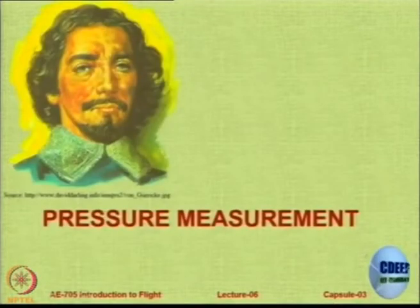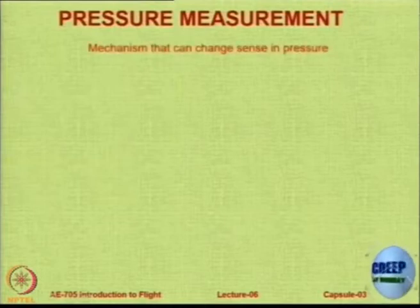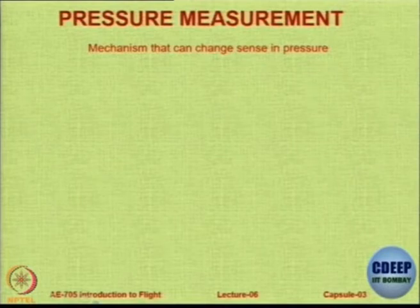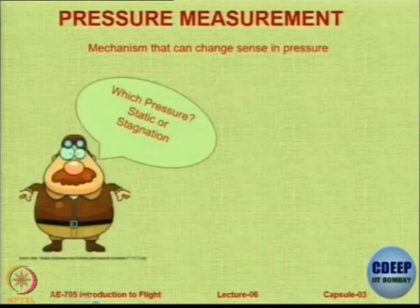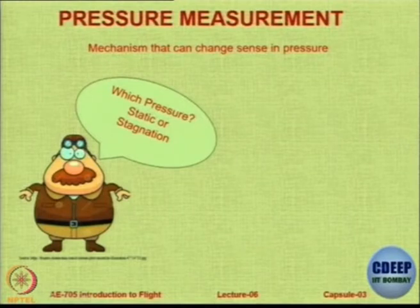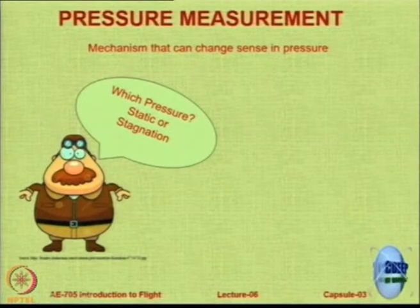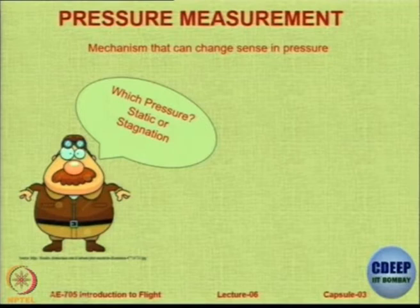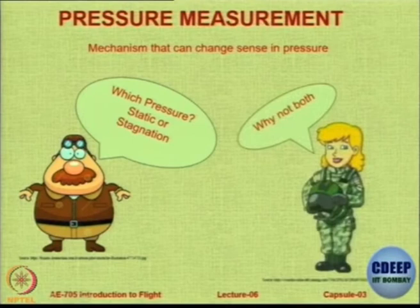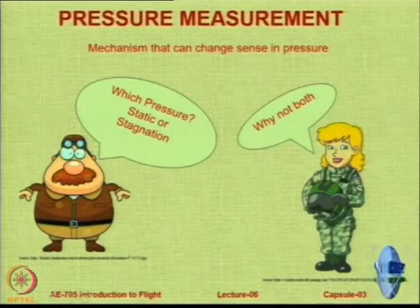Let us start with pressure measurement. Essentially what we need is a mechanism or system on the aircraft that can sense changes in pressure. The question that immediately comes to us is: which pressure are we measuring? Is it the stagnation pressure — the pressure when the fluid is brought to rest isentropically — or is it the static pressure or dynamic pressure? The answer is we measure both of them, because both are of use to us.